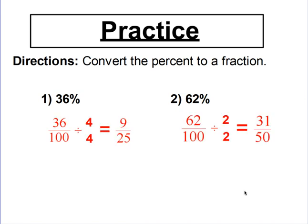36% means 36 out of 100 because the word percent means out of 100. 62% means 62 out of 100. Simplifying: for the first question, divide numerator and denominator by 4, and for the second question divide by 2. So 9 over 25 is the simplified fraction for 36%, and 31 over 50 is the simplified fraction for 62%.